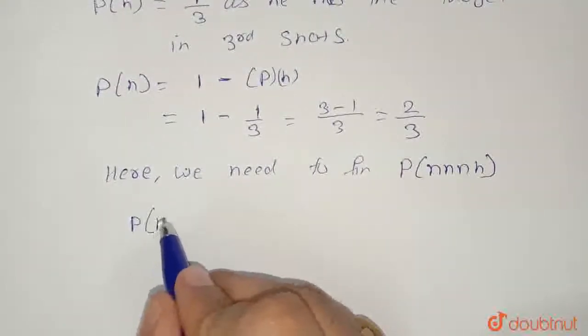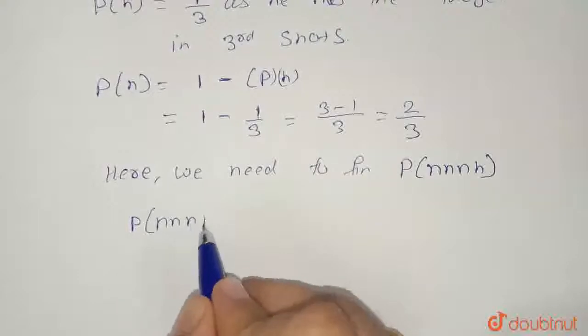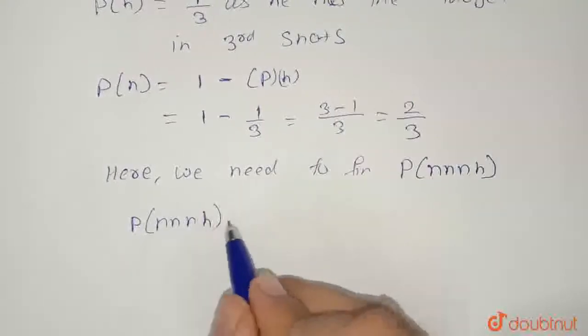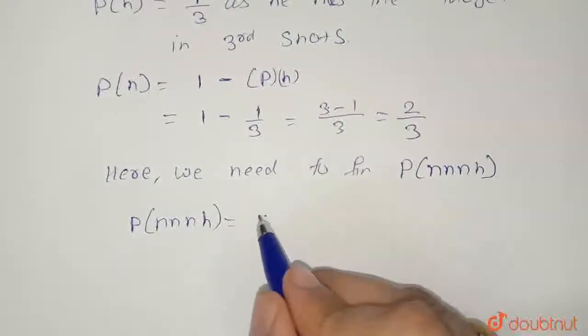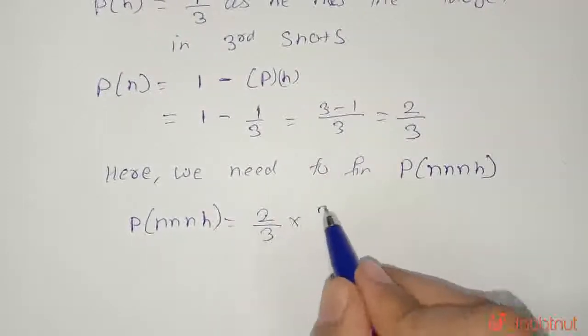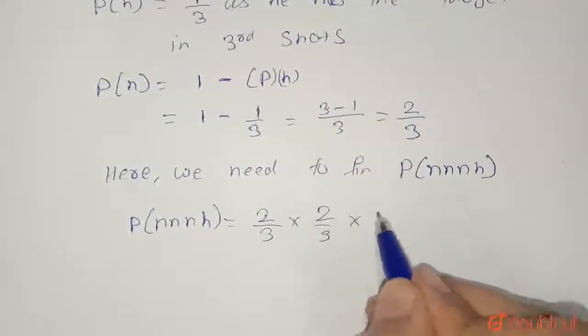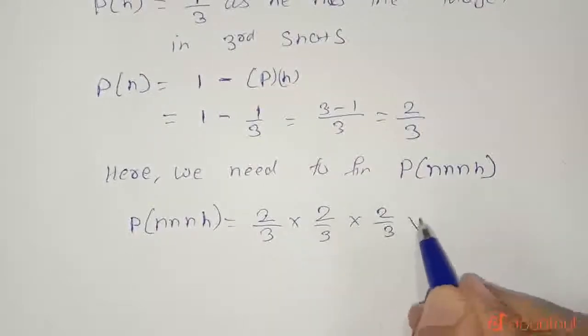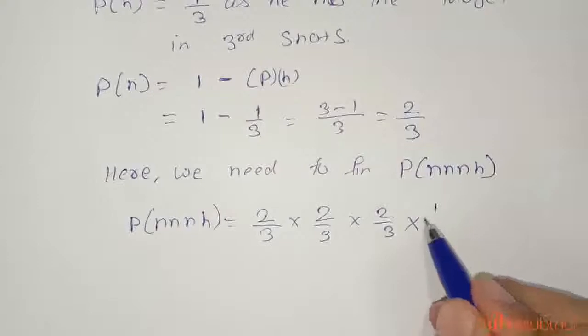Probability of event that he hits the target in the fourth shot is equal to 2 upon 3, multiply 2 upon 3, multiply 2 upon 3, and he hits the target 1 upon 3.